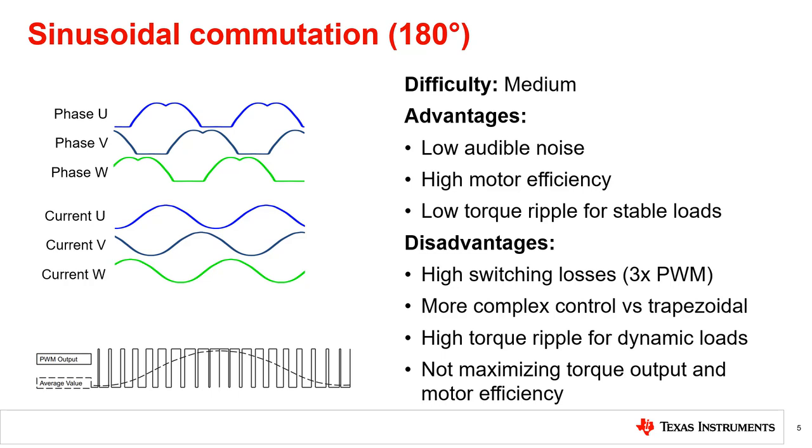Instead of having the phase voltages either 100% on or off, we can fine tune the voltage transitions using PWM, which produces much smoother waveforms. The advantages of this method include low audible noise and high motor efficiency.